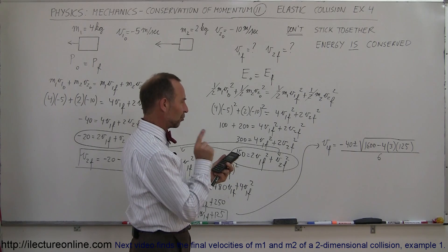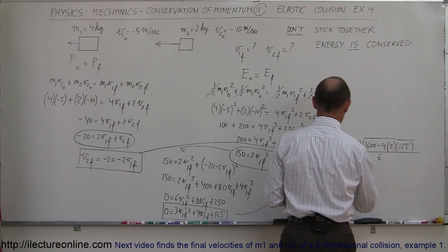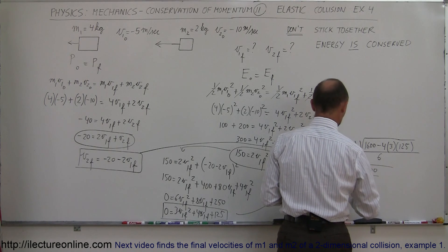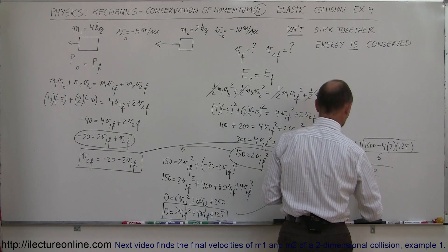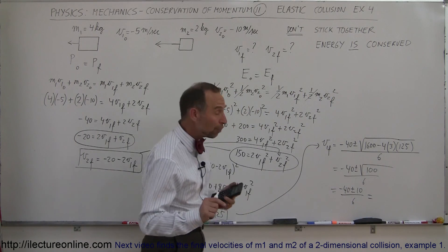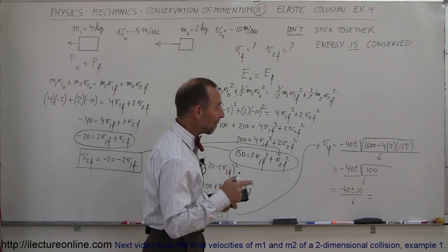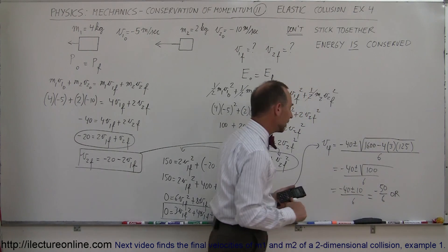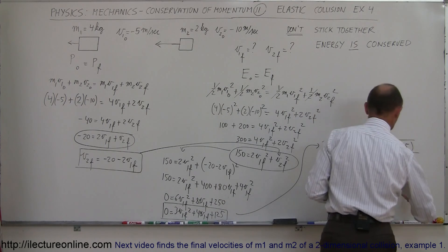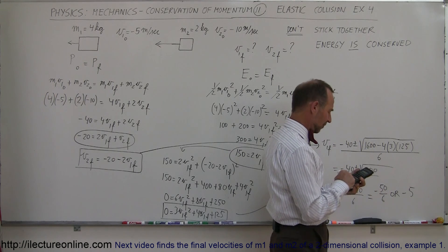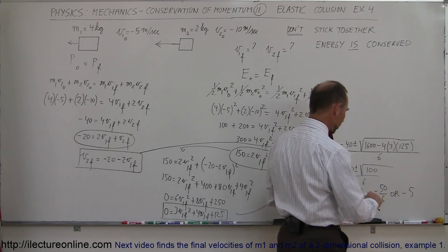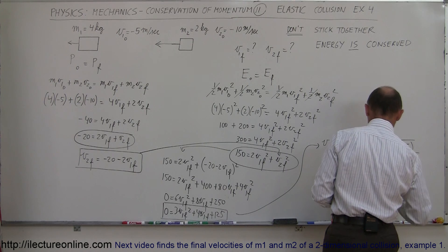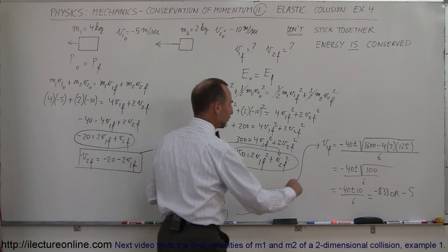So 12 times 125 subtracted from 1600 gives us minus 40 plus or minus the square root of 1600 minus 1500, which is 100, divided by 6. That equals minus 40 plus or minus 10, over 6. This gives two possible answers: minus 40 minus 10 is minus 50 divided by 6, which is minus 8.33, or minus 40 plus 10 is minus 30 divided by 6, which is minus 5. So v1 final is either minus 8.33 meters per second or minus 5 meters per second.